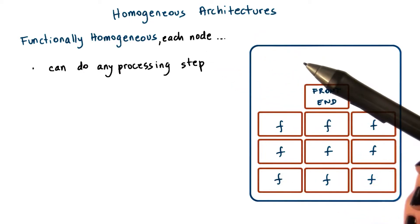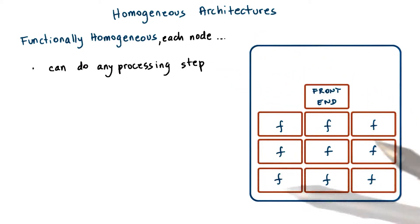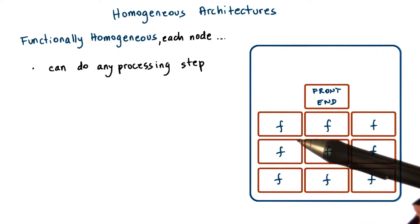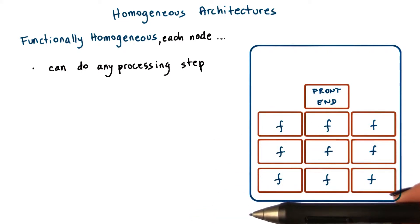Functionally homogeneous architectures can be characterized as follows. Any node can process any type of request and can do any of the processing actions that are required in the end-to-end request processing.